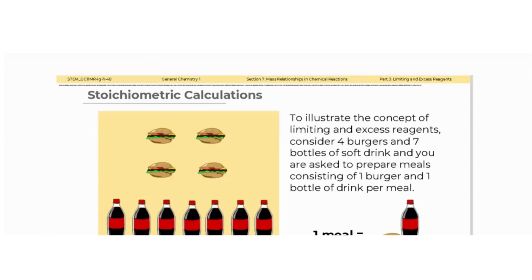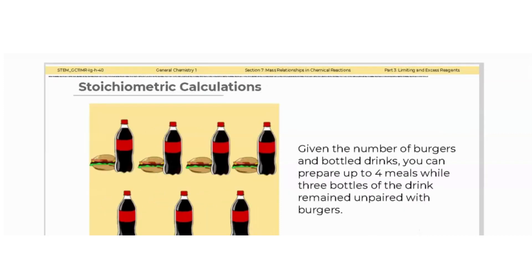To illustrate the concept of limiting and excess reagents, consider four burgers and seven bottles of soft drink, and you are asked to prepare meals consisting of one burger and one bottle of drink per meal. Given the number of burgers and bottles of drink, you can prepare up to four meals.